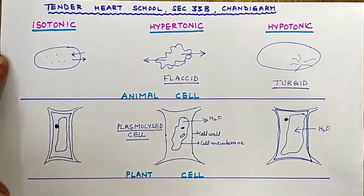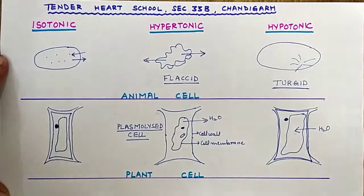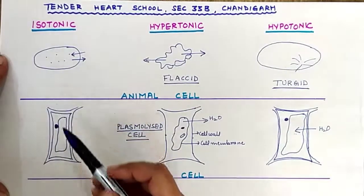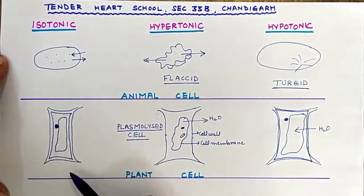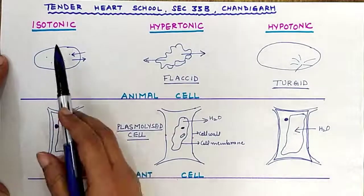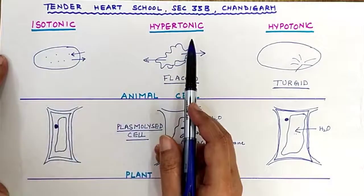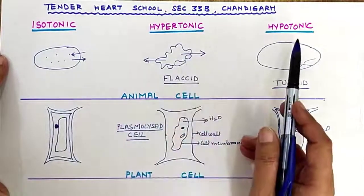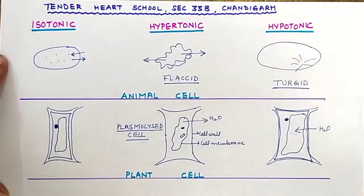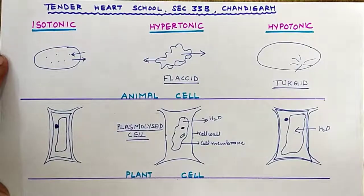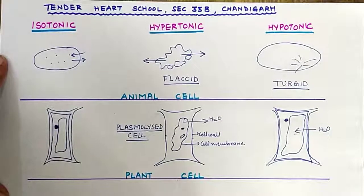So this is how we draw the diagram of an animal cell and a plant cell when kept in isotonic, hypotonic, and hypertonic solution. Thank you, children.